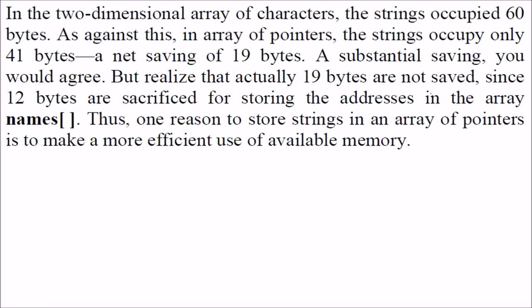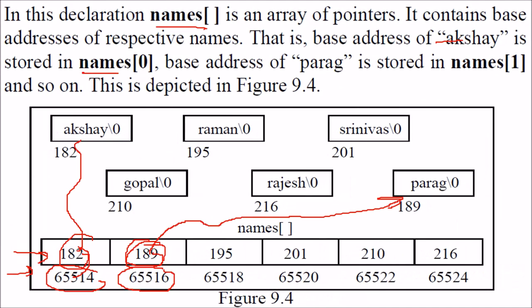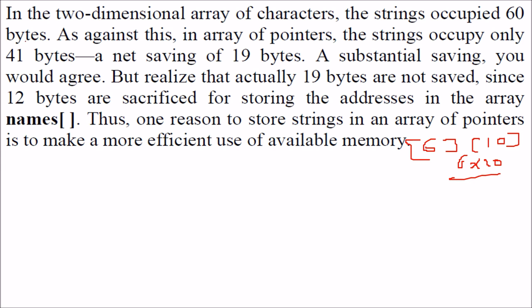In this, if we take 6 and 10, two dimensional, so 6 into 10 that is going to take you 60 bytes. But in this case, if you just count these numbers, if you just count the names, this 1, 2, 3, 4, 5, 6, 7 for size 0. All this if you count, you will see that only 41 bytes will be used. So you are saving 19 bytes, 19 bytes.